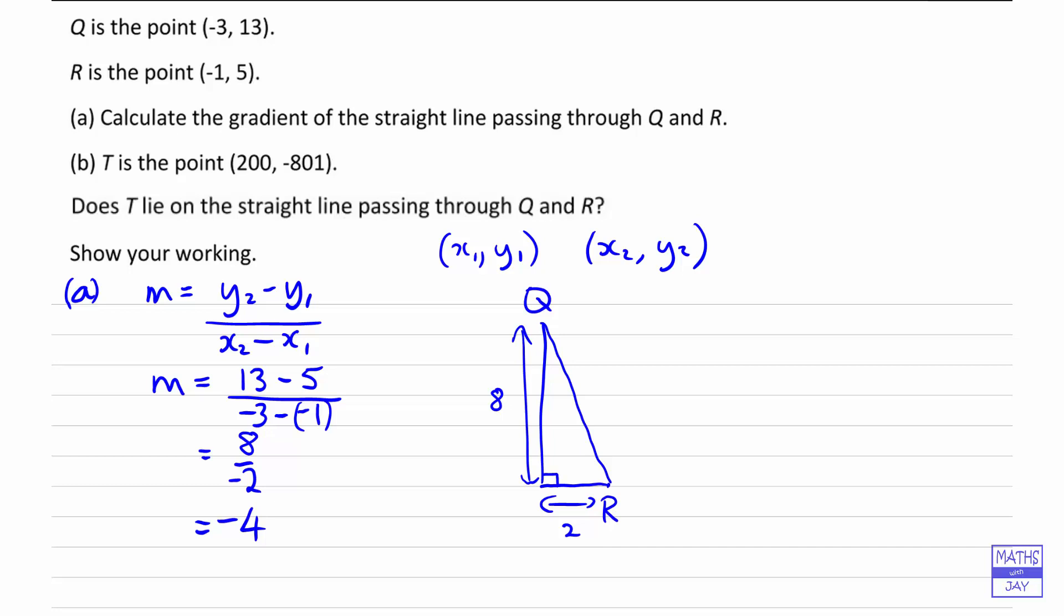Right, so that's part A done. And then looking at part B, we're given a point and we're asked whether or not that point lies on the straight line passing through Q and R. So the simplest way to do this would be to work out the equation of the line through Q and R and then see if T lies on that line. So we've already found the gradient, so let's clear ourselves some space and work out what the equation of the line is.